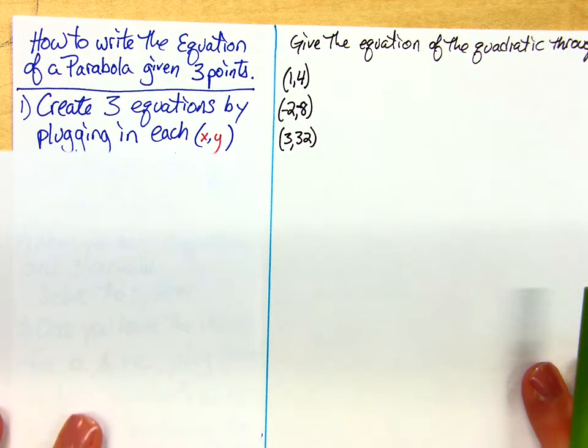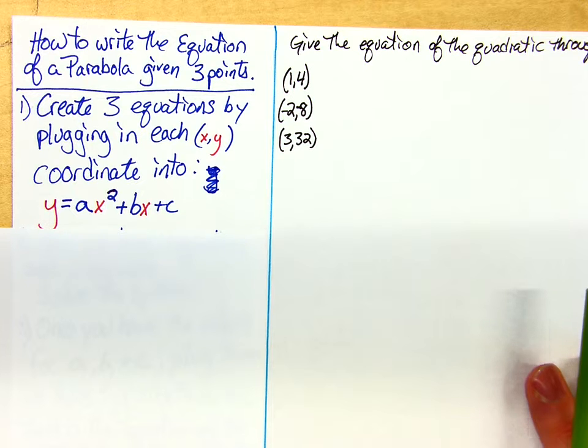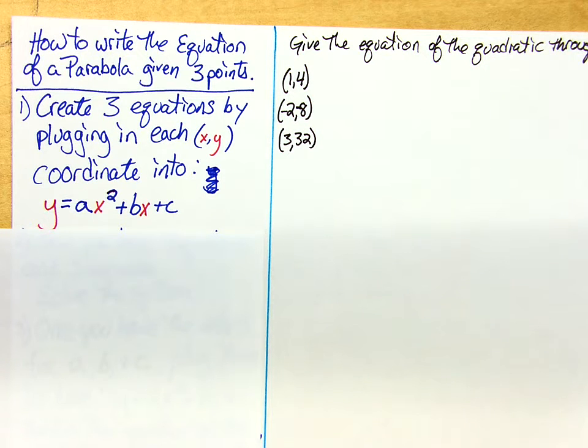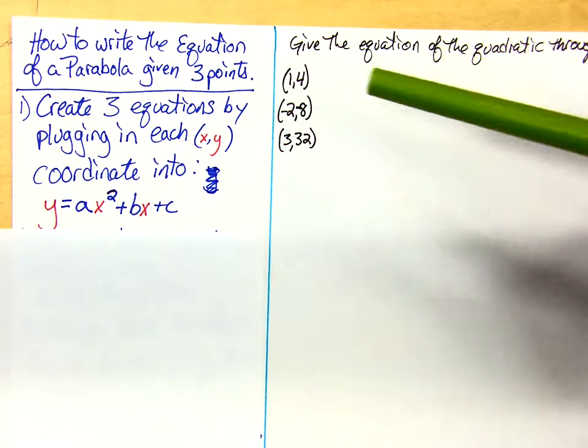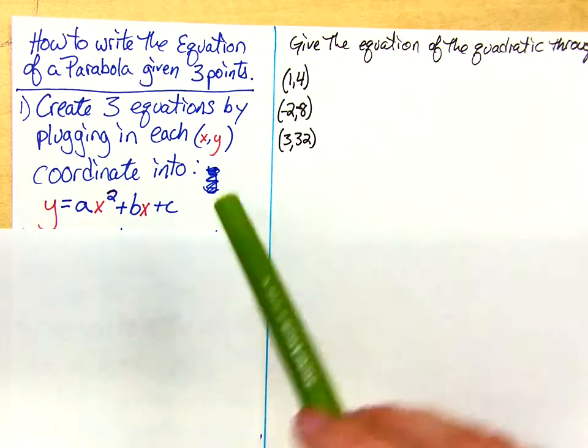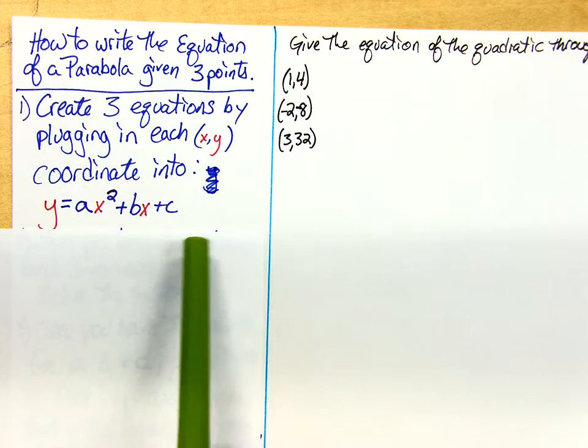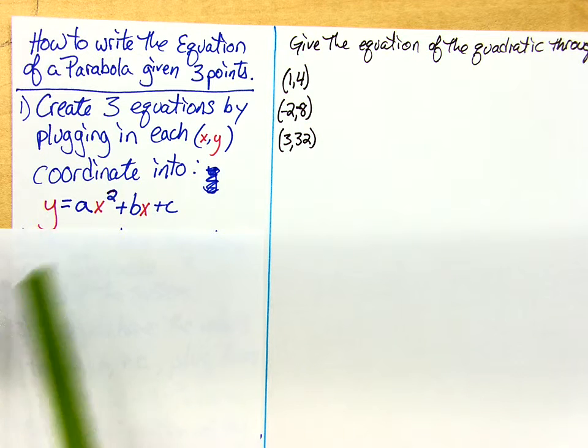The first thing we're going to do is create three new equations by taking our three x and y values and plugging each one into standard form of a parabola. Remember standard form is y equals ax squared plus bx plus c.